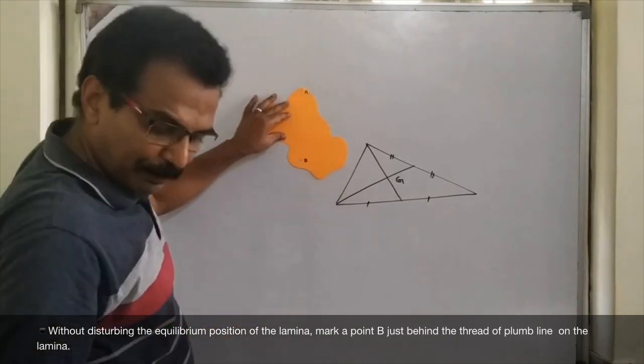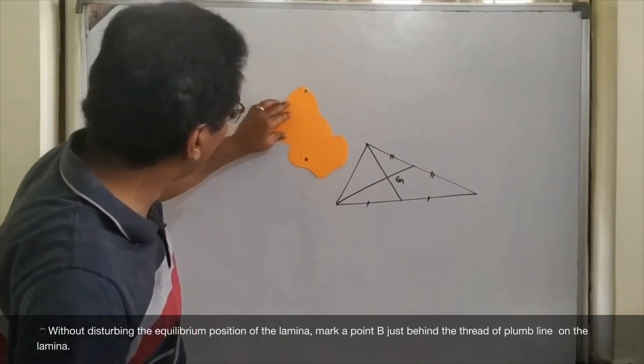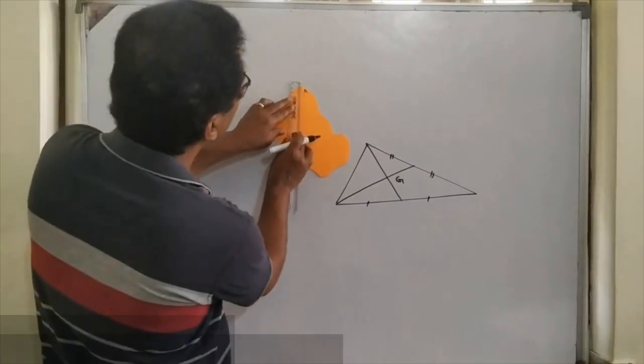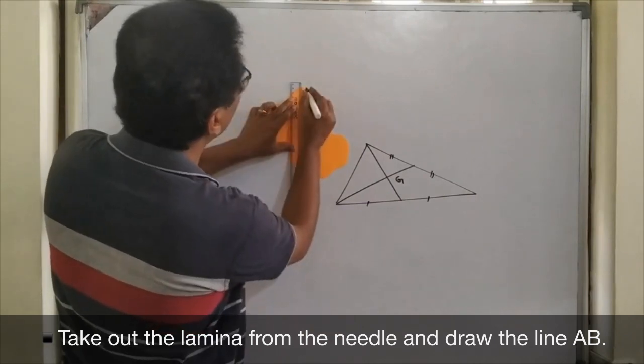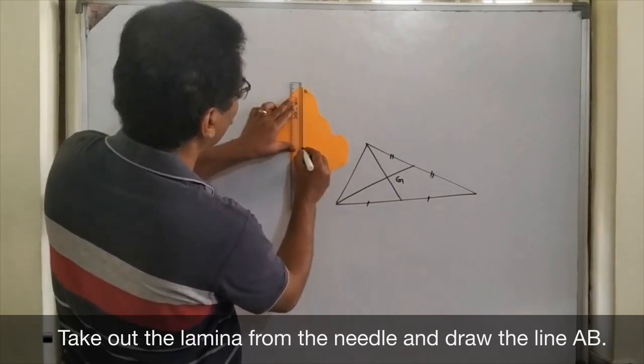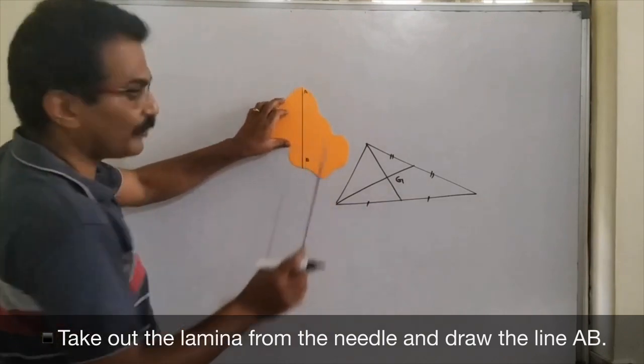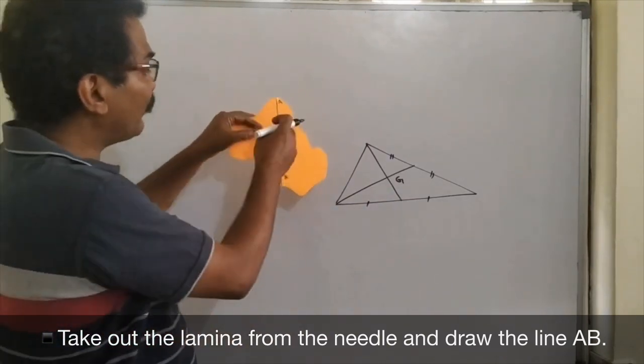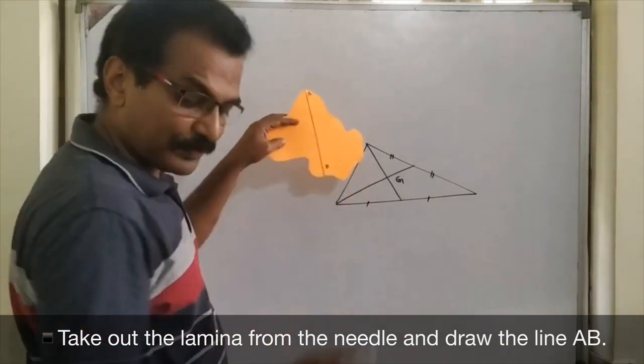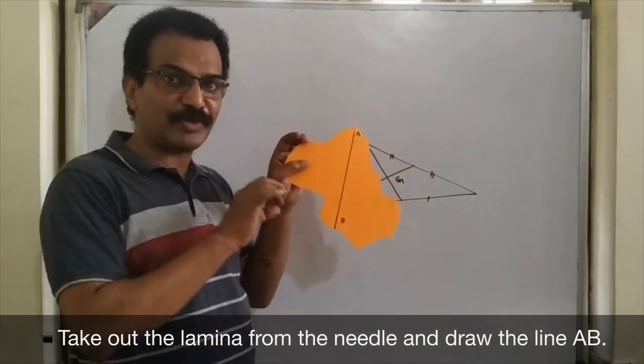Now, I will join point of suspension and the point I marked. Yes. Center of gravity of the lamina is somewhere on the line AB. So, to find the position of center of gravity...